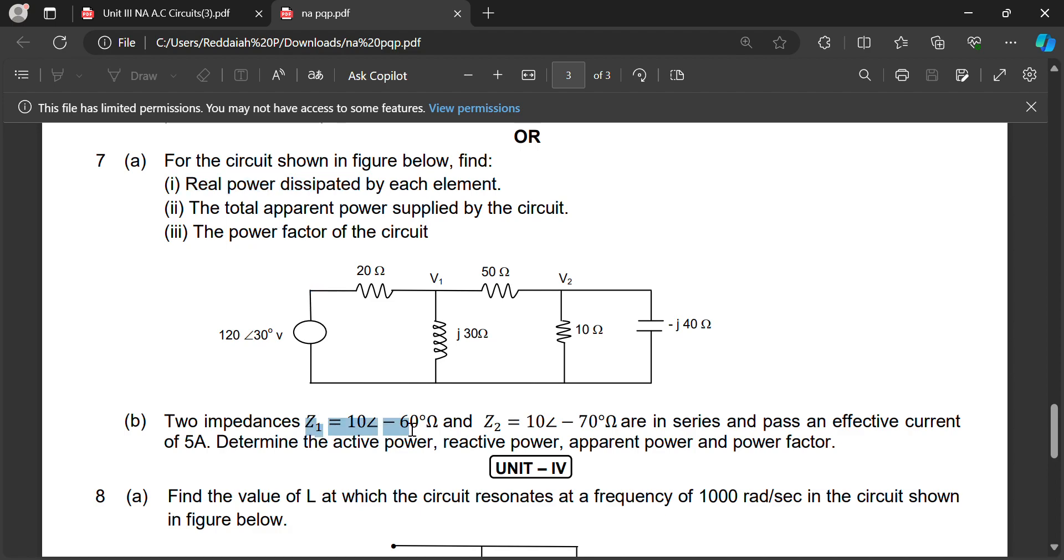Two impedances Z1 and Z2 are given in polar form in series and pass an effective current of 5 amps. Z1 and Z2 are in series means those will be added. We have to convert into rectangular form, after that total impedance we can calculate. Total impedance and current is given.